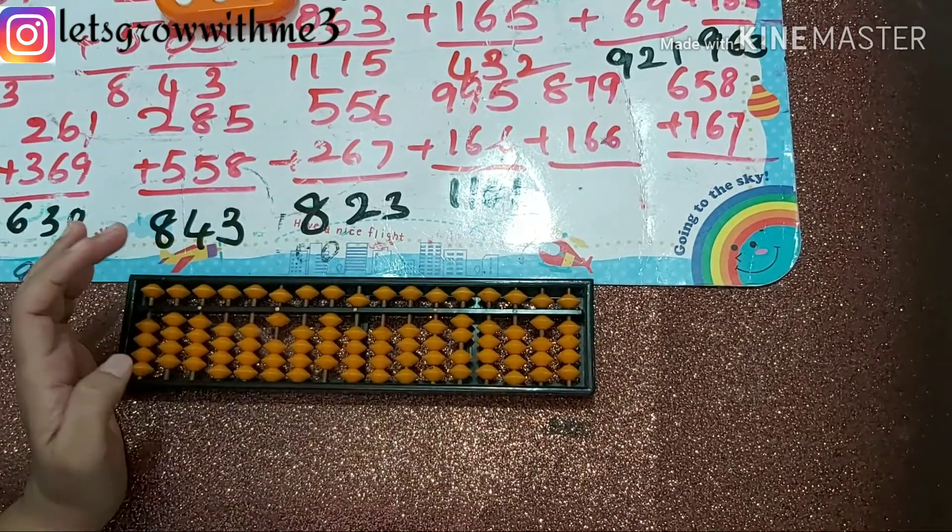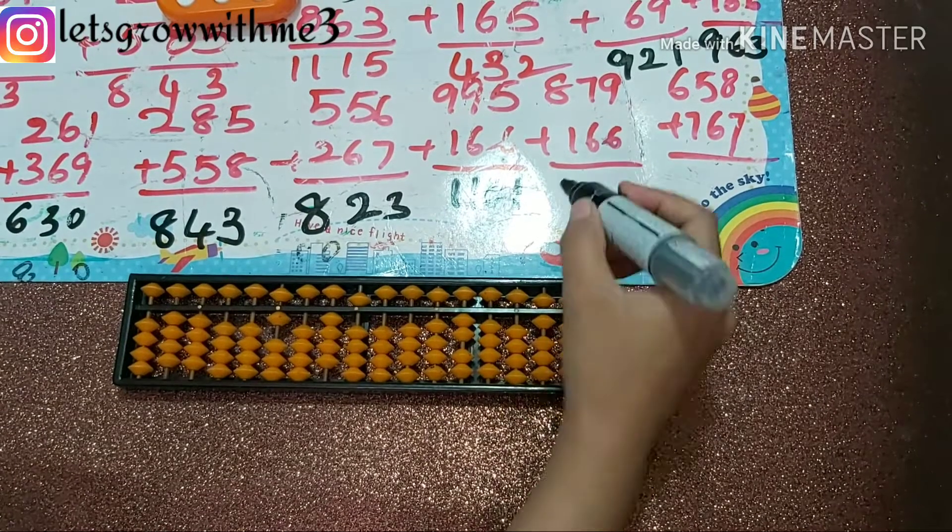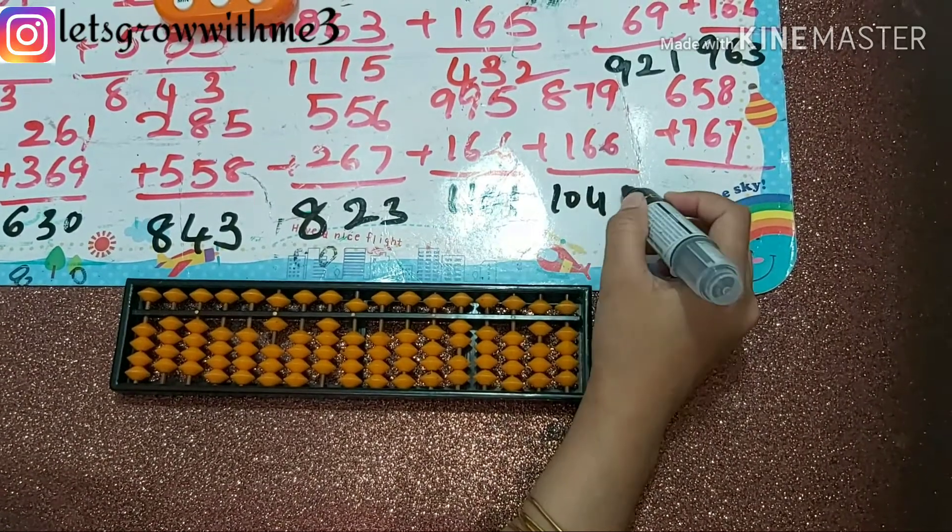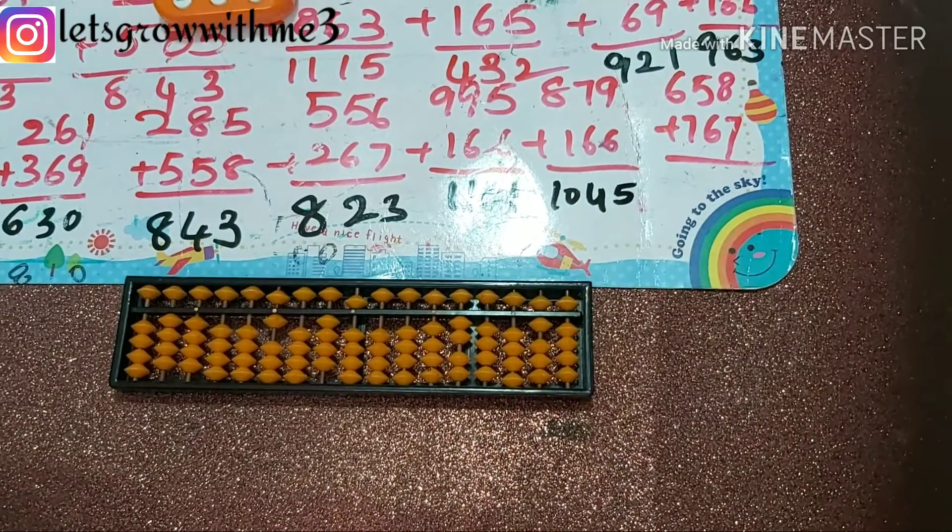So plus 10 minus 9. Next one is plus 7, plus 6, plus 10 minus 4. So answer is 1045.